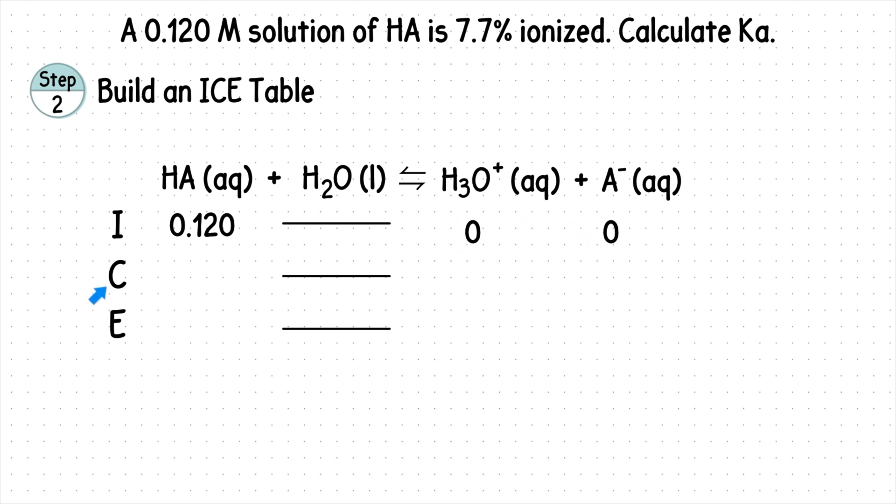The change is next, where the reactant is minus X and the products are plus X. Add rows I and C together to get row E, which represents the concentrations at equilibrium.